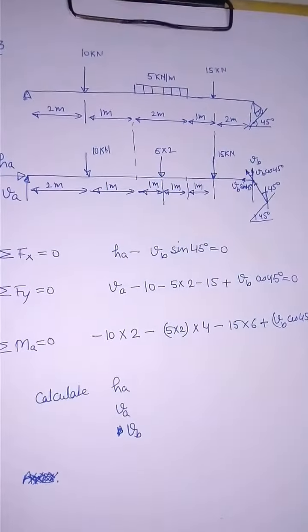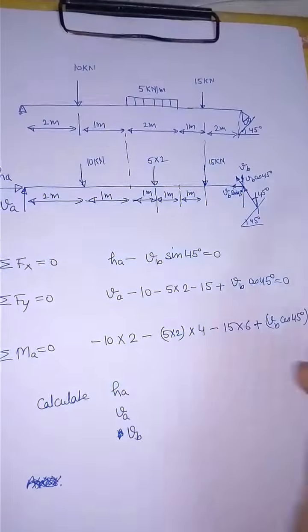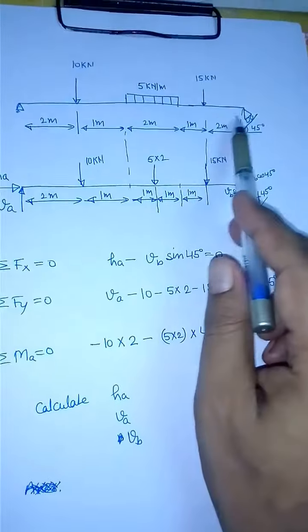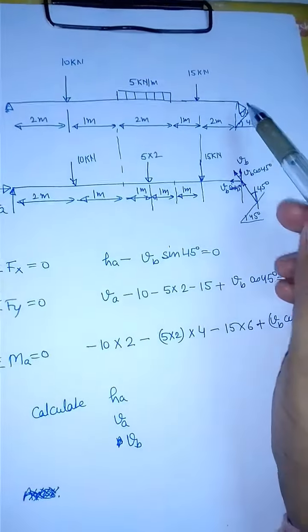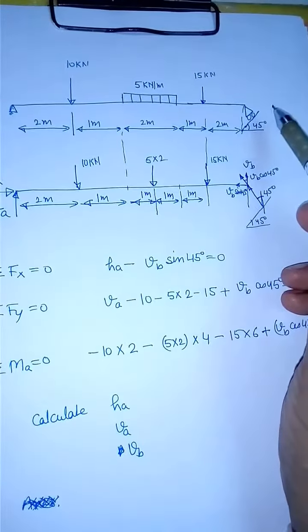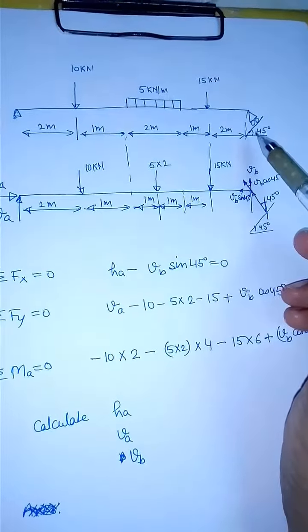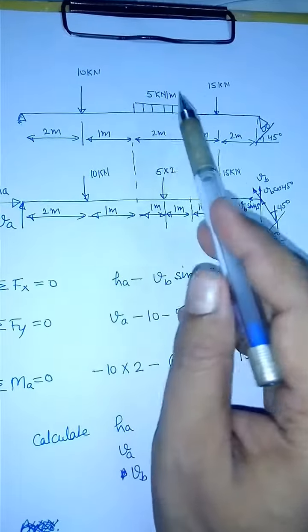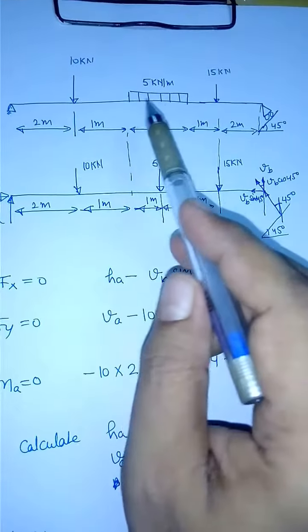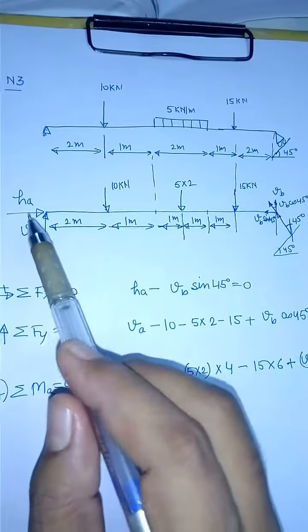Let us take another question on calculation of reaction. Here is a beam with a support here - it's a roller support on an inclined plane, and this inclination is making a 45 degree angle from here. Two of the forces are concentrated and one is a UDL, uniformly distributed load.